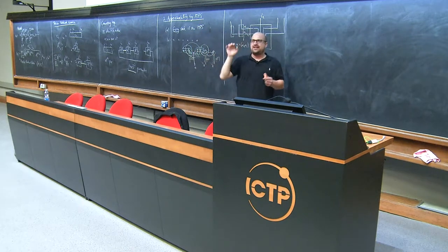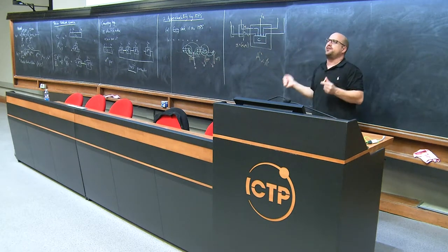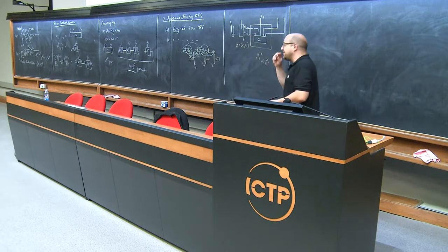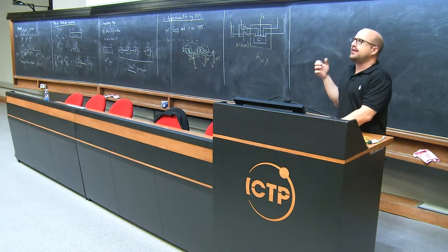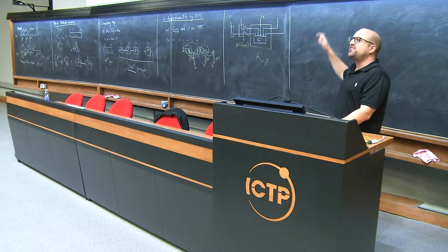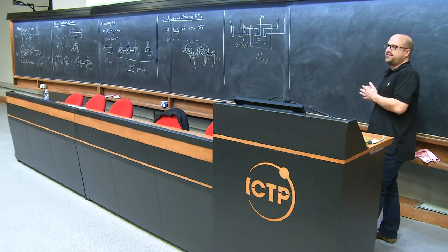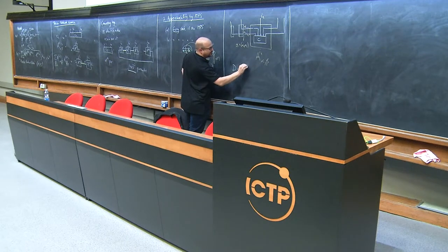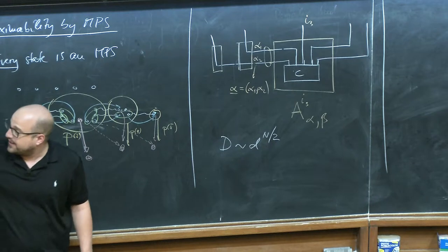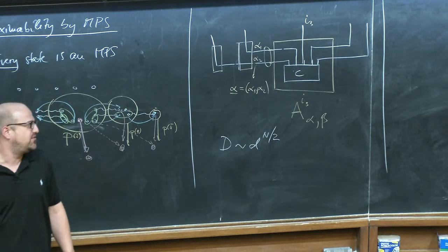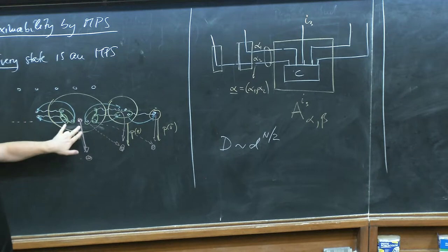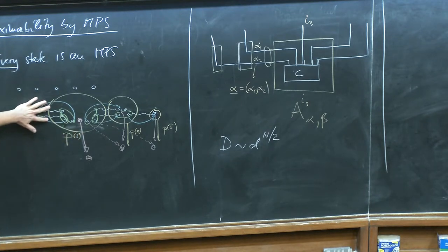More important than completeness is that for ground states of local gapped Hamiltonians — states obeying an area law — we can efficiently approximate the state with MPS. Just by parameter counting, the bond dimension D² would naively need to scale exponentially with n. You can see why: to build a general state, you might need to teleport n/2 − 1 sites to one side, requiring that amount of entanglement. For generic states, there is no way to get away with less.